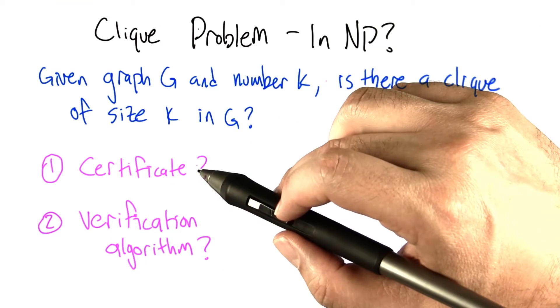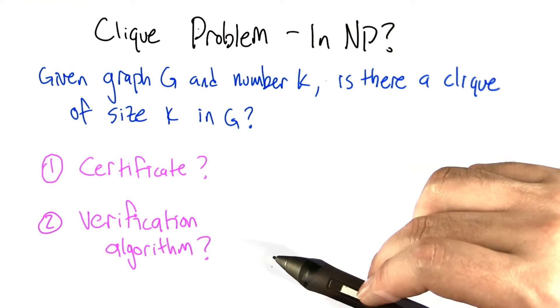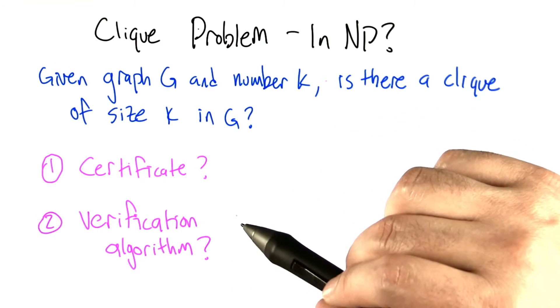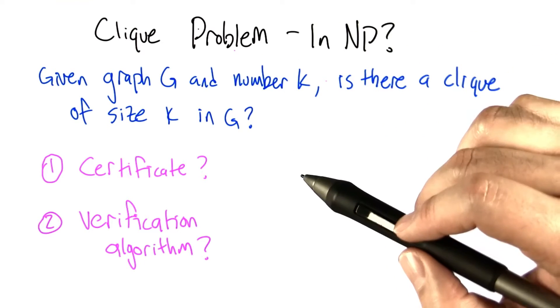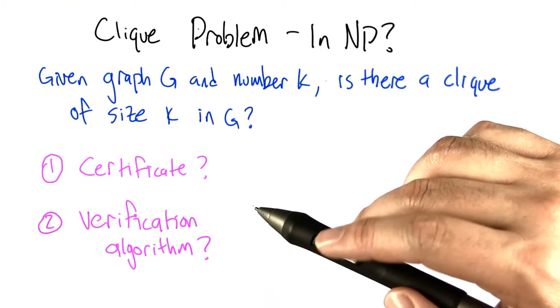It needs to have a short accepting certificate, and it needs to have a fast verification algorithm. In particular, what we don't need to do is actually have a solution to this problem that's fast. We just need to show that the certificate verification algorithm is fast.